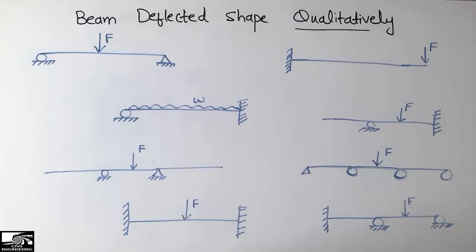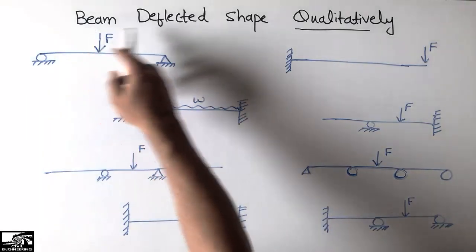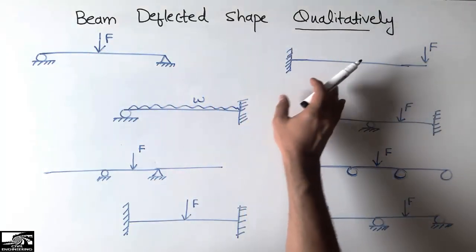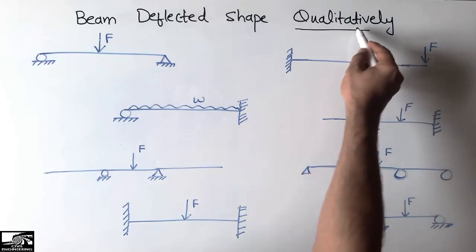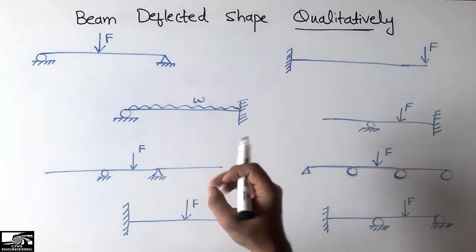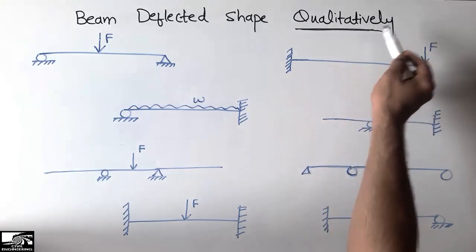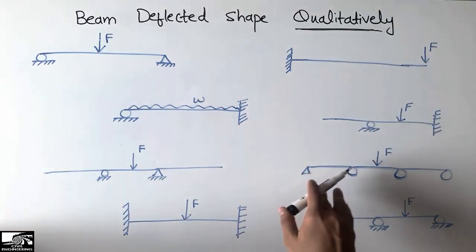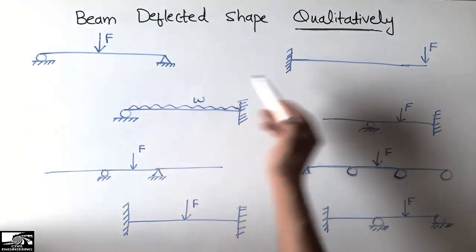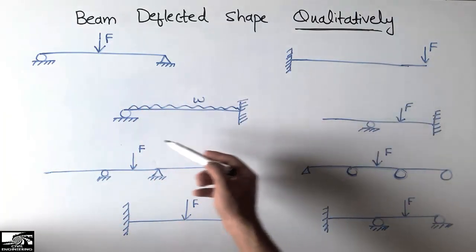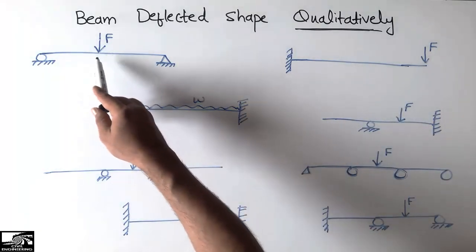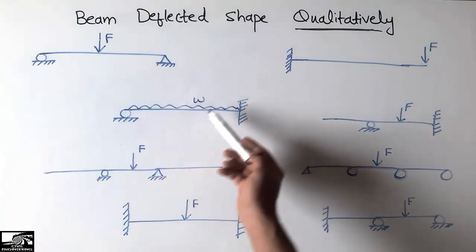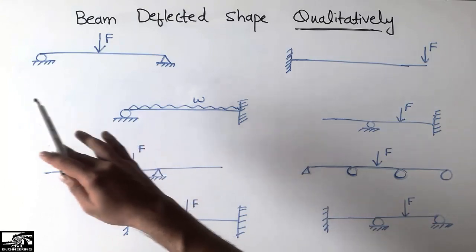Hello guys, welcome back to the civil engineering YouTube channel. Please subscribe our channel for daily civil engineering videos. Today our lecture is about the beam deflected shape, but qualitatively. In this lecture we will be studying various types of beam deflection curves, but only qualitatively — not the quantity. We will draw the shapes qualitatively. We have different types of beams with different loads, like concentrated load and UDL (uniformly distributed load).